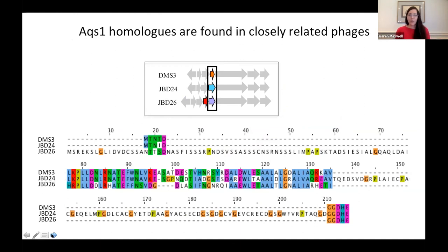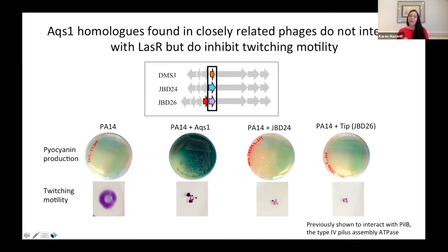So we had this inhibitor of LasR, and we looked at the homologs present in closely related phages. DMS3 AQS1 is only 69 amino acids, but homologs in other closely related phages had an extra domain on the N-terminus and some had an extra domain on the C-terminus. We were curious whether these homologs also bound to LasR and were inhibiting quorum sensing.